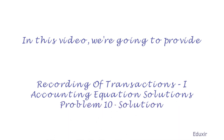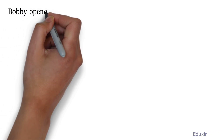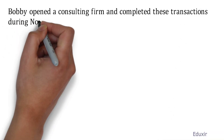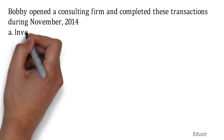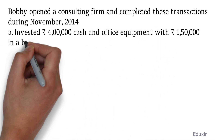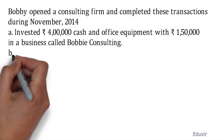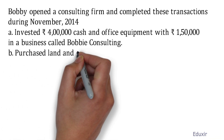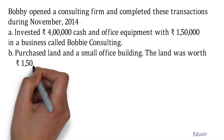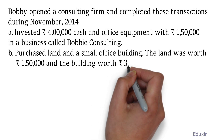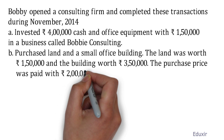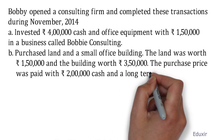The problem statement is as follows. Bobby opened a consulting firm and completed these transactions during November 2014. He invested 4 lakh rupees cash and office equipment worth 1 lakh 50 thousand in a business called Bobby Consulting. He purchased land and a small office building — the land was worth 1 lakh 50 thousand rupees and the building worth 3 lakh 50 thousand rupees. The purchase price was paid with 2 lakh rupees cash and a long-term note payable for 8 lakh rupees.